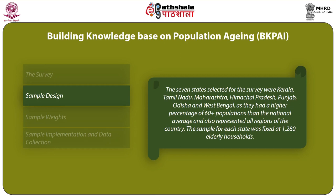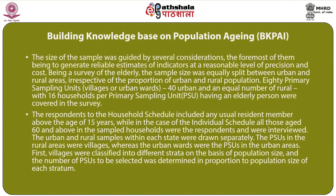The sample for each state was fixed at 1,280 elderly households. The sample size was guided by the need to generate reliable estimates at a reasonable level of precision and cost. Being a survey of the elderly, the sample size was equally split between urban and rural areas, irrespective of the proportion of urban and rural populations. There were 80 primary sampling units (PSUs) — villages or urban wards — 40 urban and 40 rural, with 16 households per PSU.